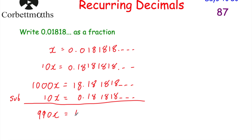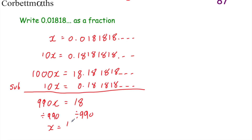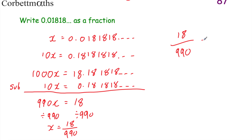We're left with 18 take away 0 equals 18. So 990x equals 18. We can divide both sides by 990, giving x equals 18 over 990. That means our recurring decimal 0.018181818... equals 18/990. Now we can cancel this down — both numbers are in the 9 times table, so dividing by 9 gives 2 over 110. They're both even, so halving gives 1 over 55. So 0.018181818... equals 1/55. And that's a useful technique.